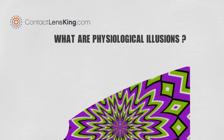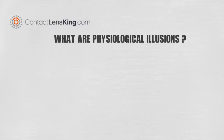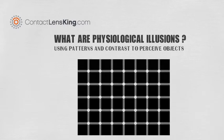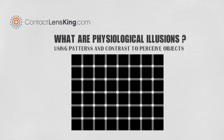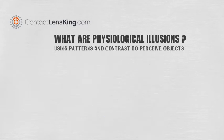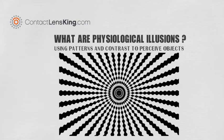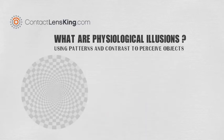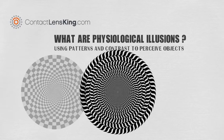Other physiological illusions can even cause the eyes and brain to perceive objects that do not exist in the image. For instance, can you see black dots appear and disappear in this image? Can you see circles appear in this one? By simply using various patterns of black and white, the brain can be tricked into perceiving objects.